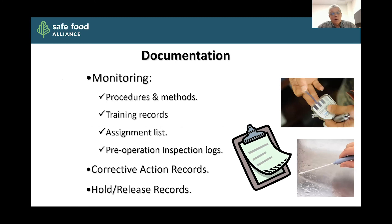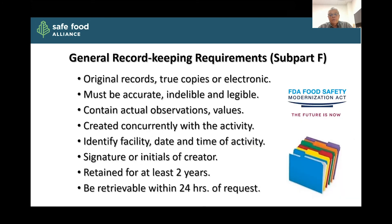Documentation: you want your procedures and methods, training records, assignment lists, pre-operational inspection logs, corrective action records showing what you did when you found a problem, and hold and release records. Under the FSMA regulation, original records or two copies that are electronic, accurate, indelible, and legible must contain actual observations or values, concurrent with the activity, identify the facility, date and time of activity, and signature or initials of the creator. Records must be retained for at least two years and be retrievable within 24 hours of request.